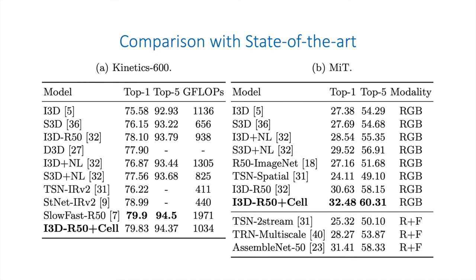Finally, we insert our cells into I3D-R50 and compare with state-of-the-art methods. On Kinetics-600, we achieve a similar accuracy with SlowFast, but with fewer FLOPs during inference. On MIT, we achieve the highest accuracy with only RGB frames and outperform all the previous methods.